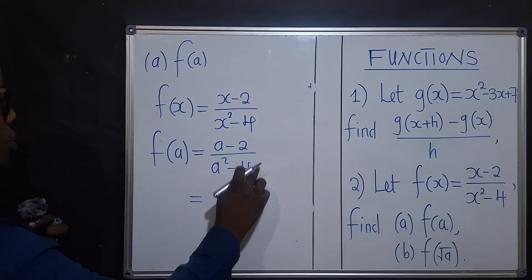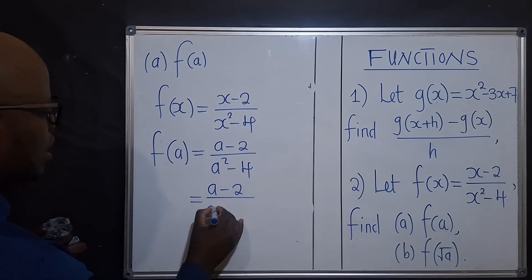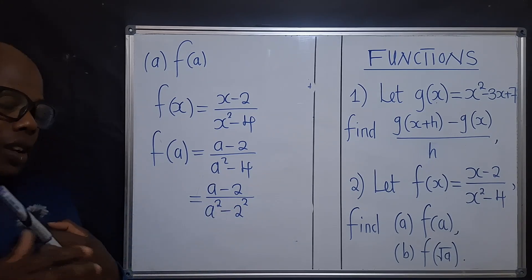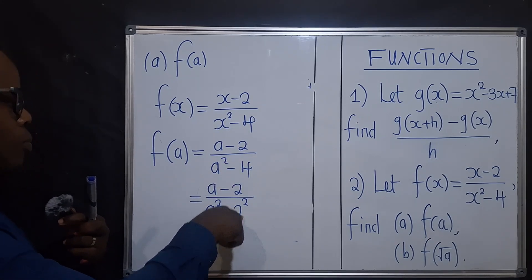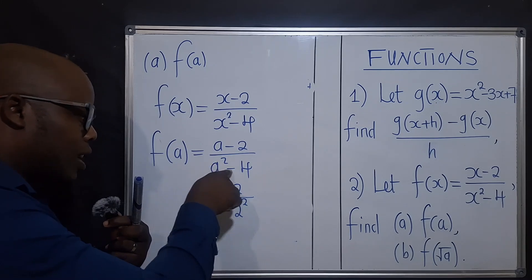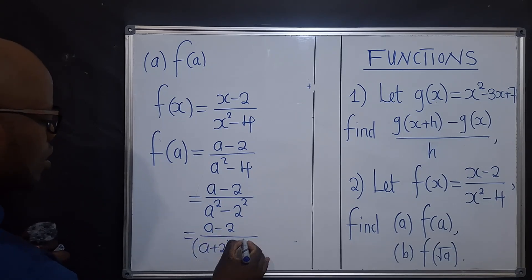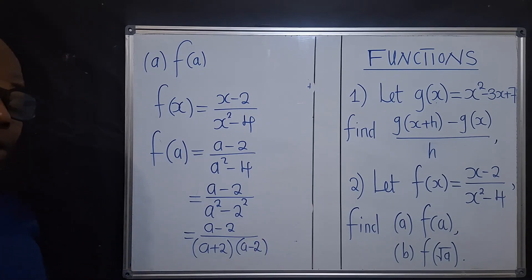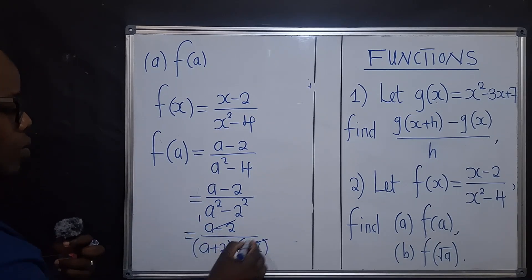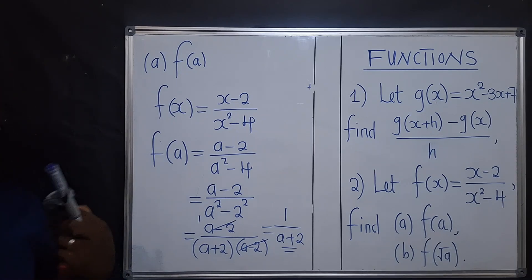We're not done — we can simplify further. There is what we call difference of two squares. So it will be a minus 2 over a power 2 minus 2 power 2. Once you apply difference of two squares, you can say a minus 2 over a plus 2, times a minus 2. And if you can see a minus 2 into each, it will cancel, and we remain with 1 over a plus 2. So that's our solution for question 2a.